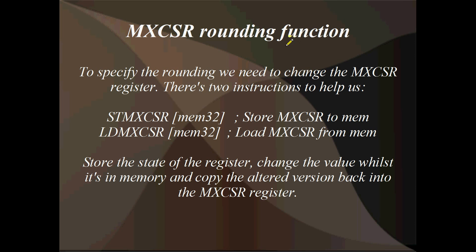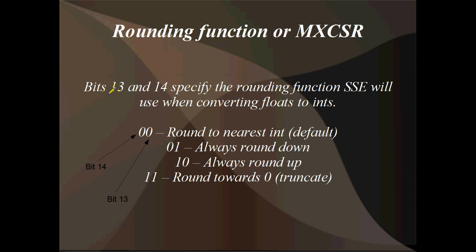MXCSR - the rounding function is what we're interested in. MXCSR is one of the SSE registers, and when we cast from a floating point number to an integer, we've got a choice with how we round. We specify what we want by changing two bits of the MXCSR register. Bits 13 and 14 are the bits that specify the rounding function - what SSE does when it has to round floating point numbers to integers. We've got four options since there are two bits. If both bits are 0, that means round to nearest, and I believe that's the default.